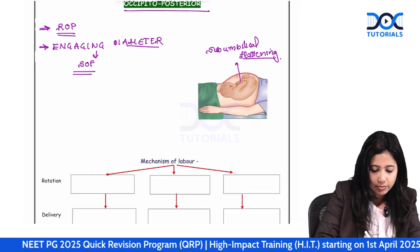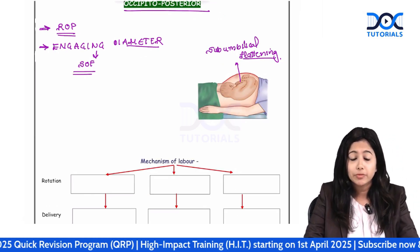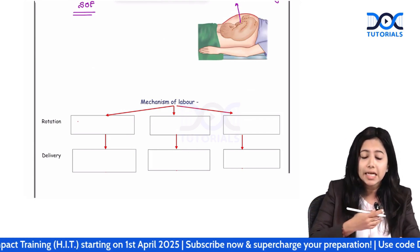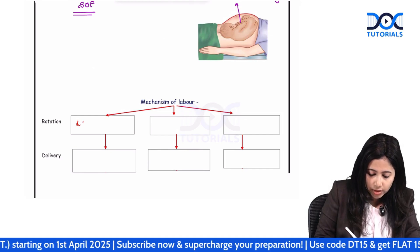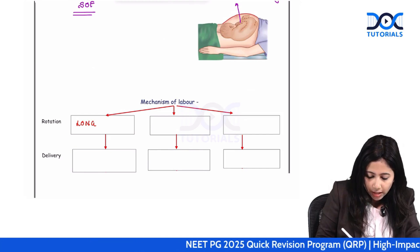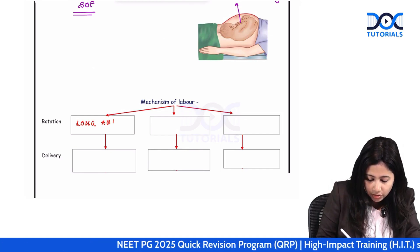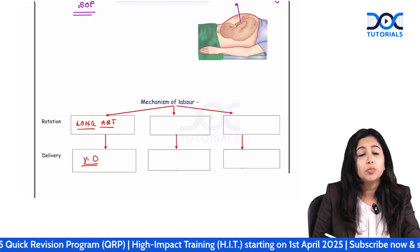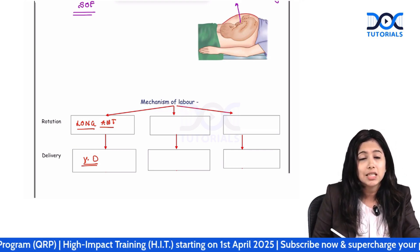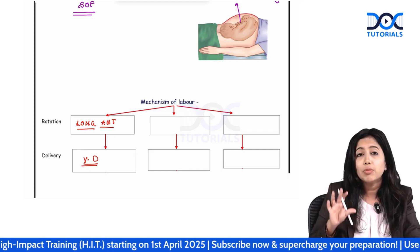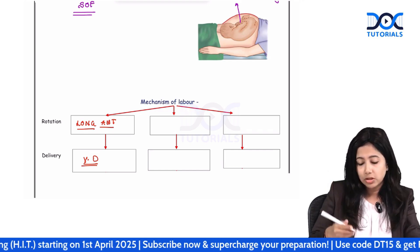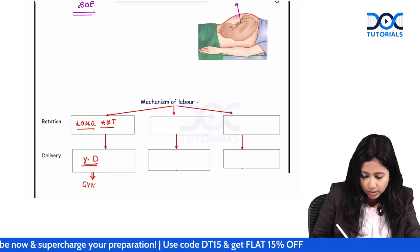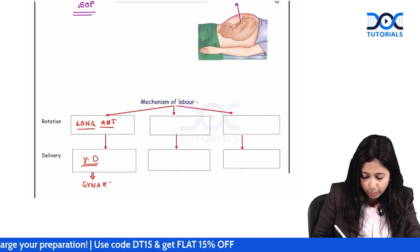Moving ahead with the mechanisms of labour: the majority of these babies will have a long anterior rotation and they deliver by vaginal delivery. So if you have occipitoposterior, that does not mean cesarean section — very important point. Babies often have a long anterior rotation and deliver vaginally. This is often associated with gynecoid type of pelvis.